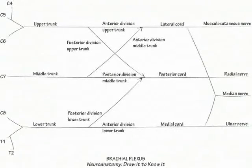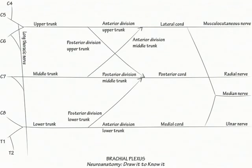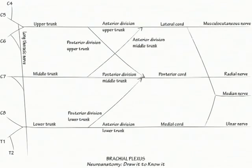Now show C5, C6, and C7 together derive the long thoracic nerve, which innervates serratus anterior. It pulls the scapula forward and outward.